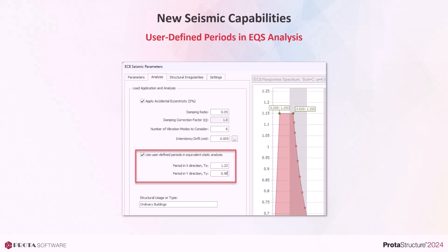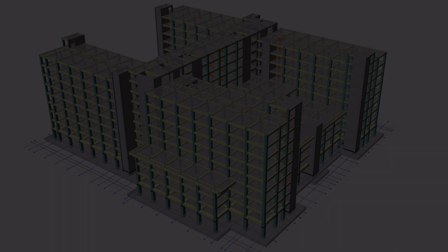This is especially necessary if you are using a variation of a seismic code with different upper limits.